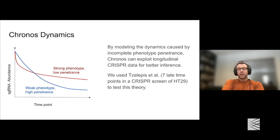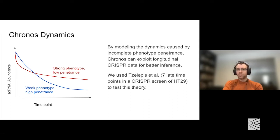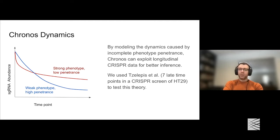Those results were all from using Project Achilles and Project Score data—many cell lines read out at only one late time point. But Kronos is a dynamic model actually designed to exploit cases where you have readouts at multiple time points. This is becoming more common in CRISPR experiments, and I expect it will continue to become more common, in part because the cost of sequencing continues to fall at a dramatic rate—so getting sequencing at different time points becomes a relatively small proportion of the cost of running a CRISPR screen.